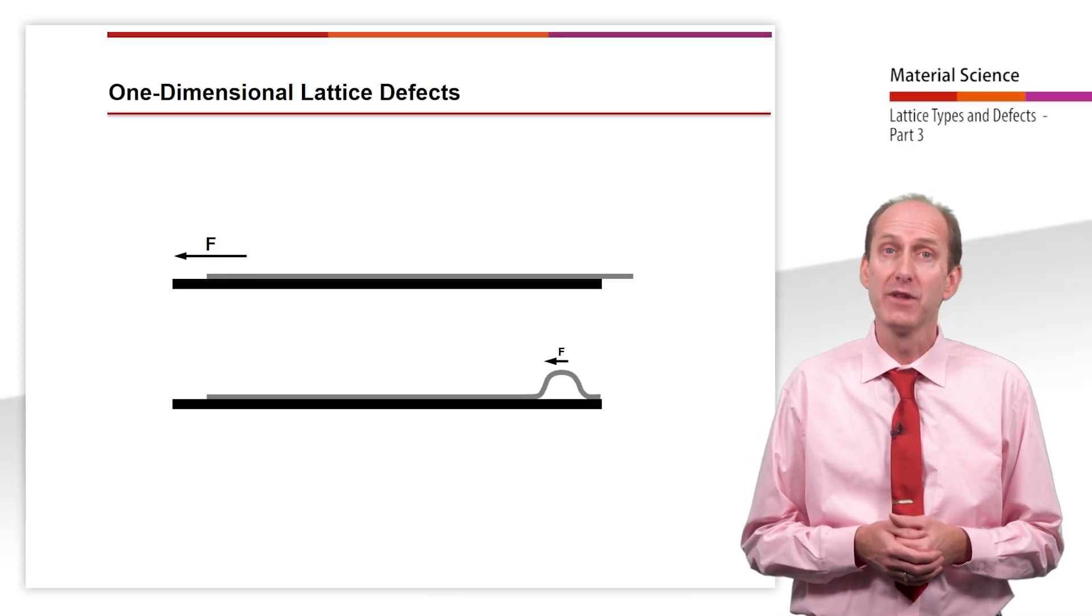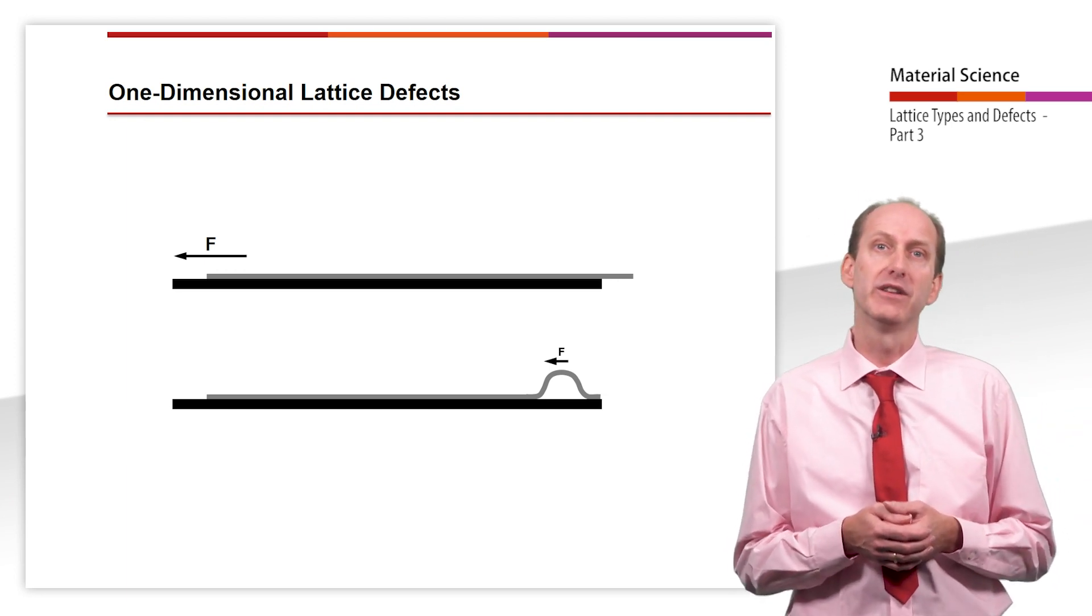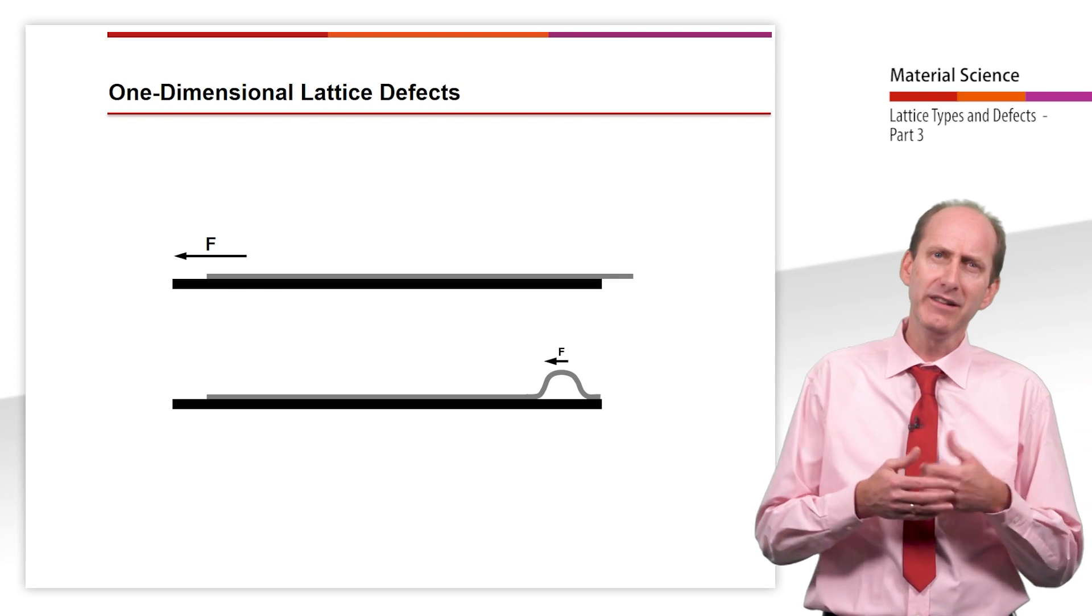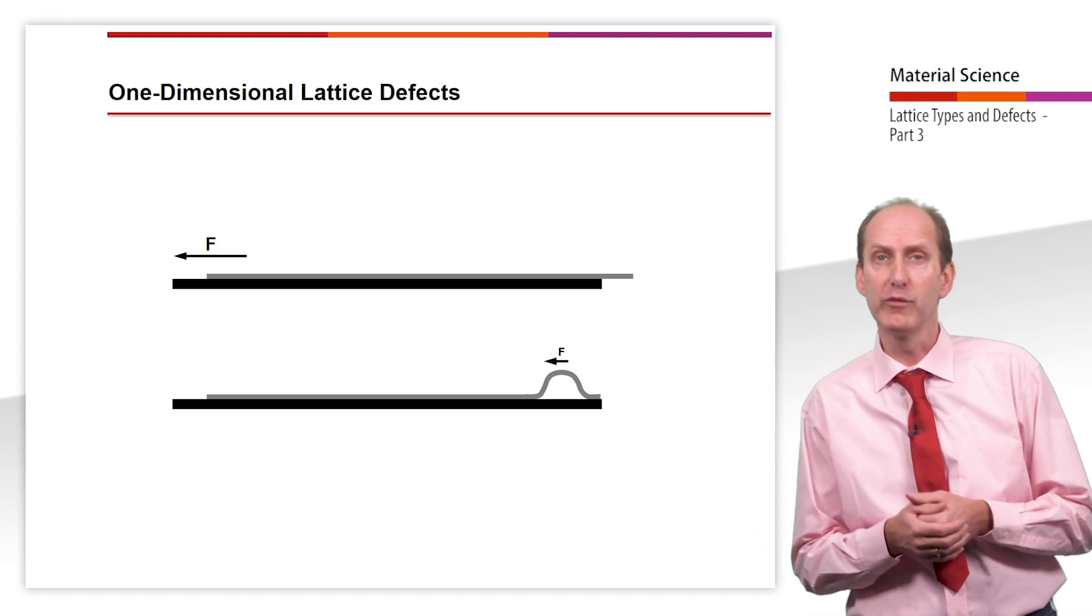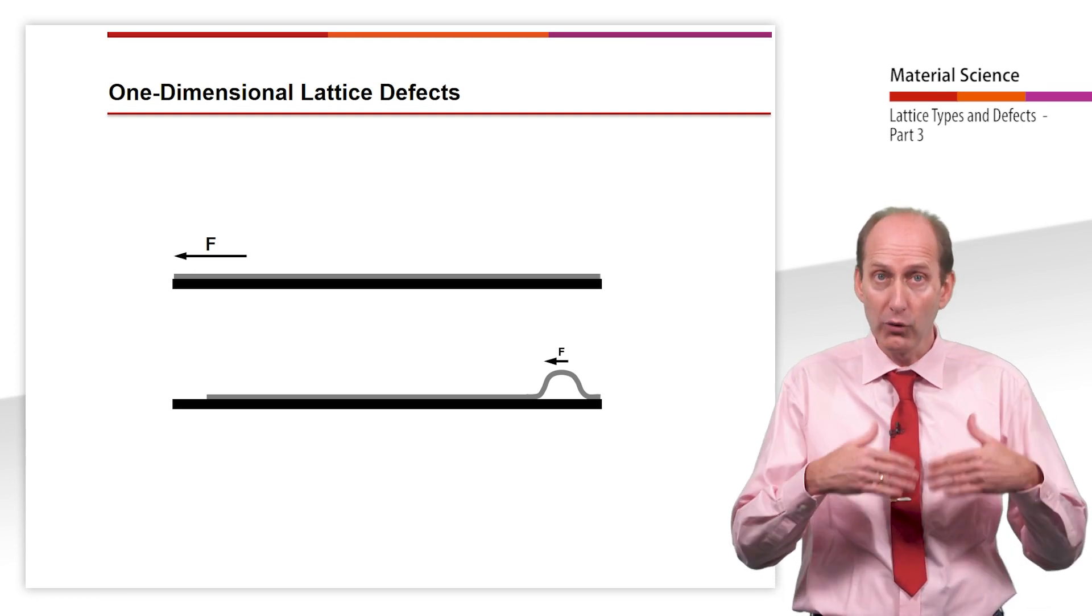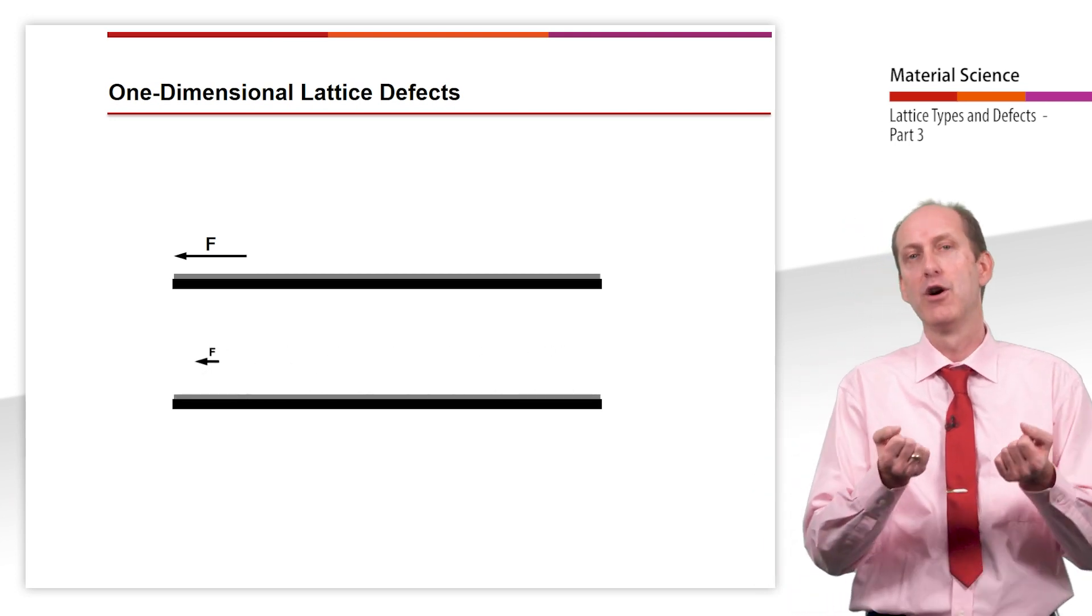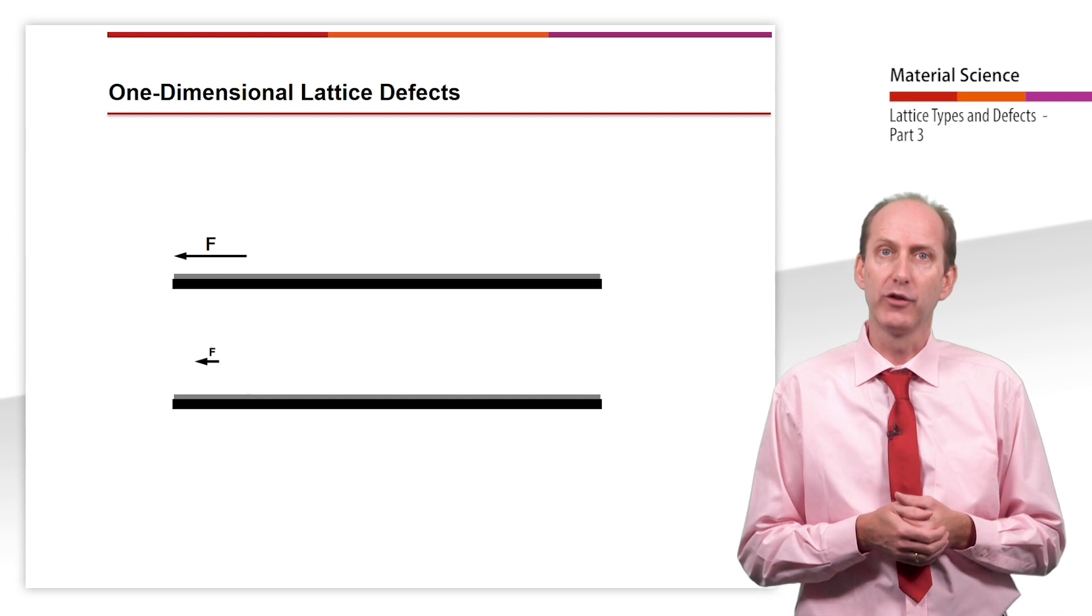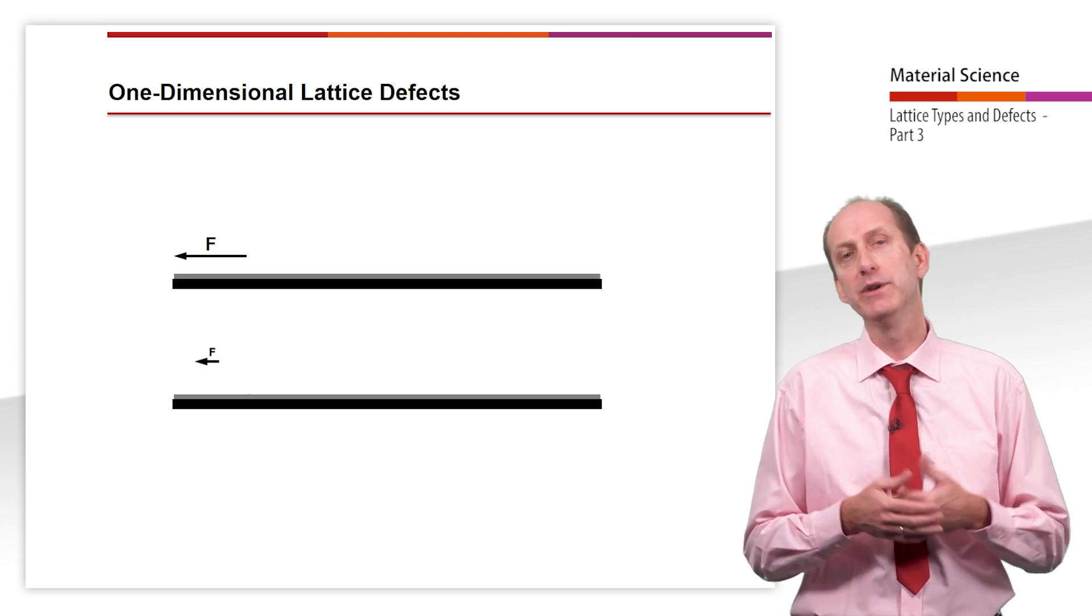Due to the plastic deformation caused by dislocation motion, the force required for the displacement of lattice planes is relatively low. This phenomenon of deformation through dislocation motion can easily be explained with the example of moving a large carpet on the floor. It is clear to everyone that it takes significantly less effort to first form a fold in the carpet, and then pull the fold out rather than sliding the entire carpet across the floor. The low expenditure of force required for plastic deformation using dislocation motion is a reason for the good plastic deformation of metallic materials.